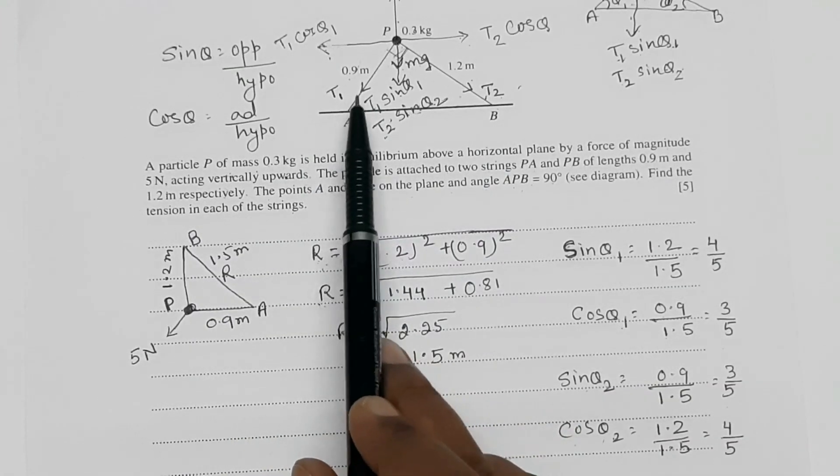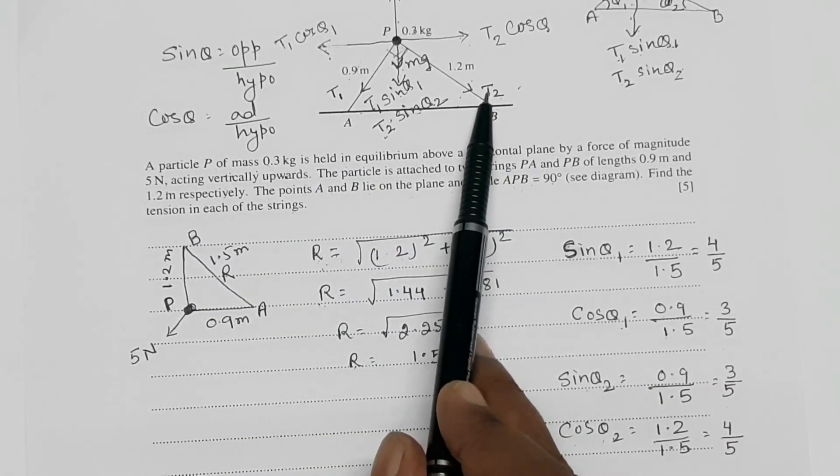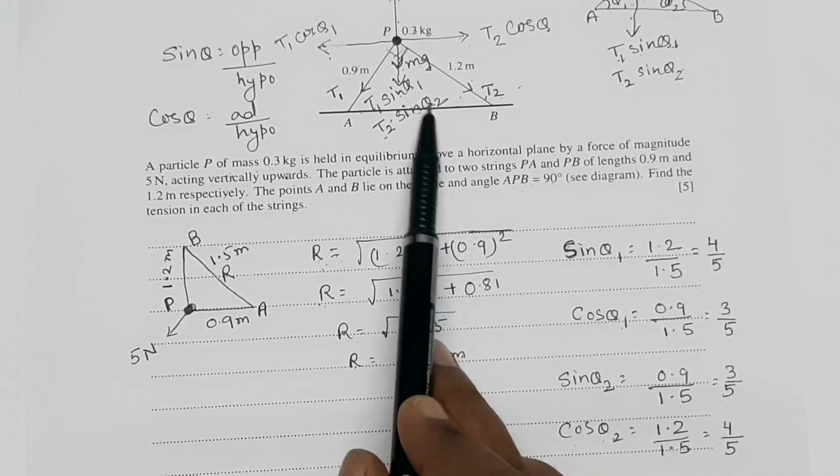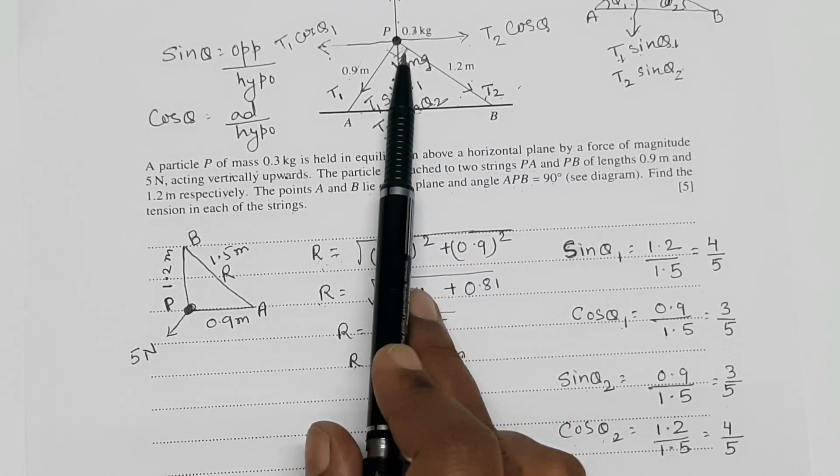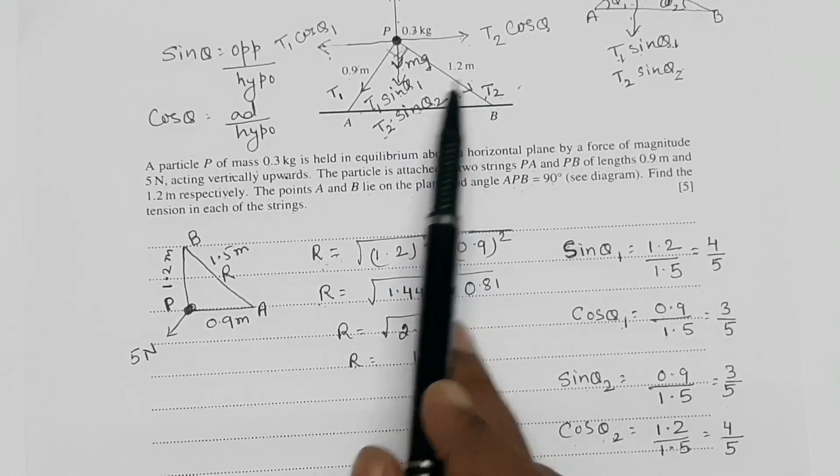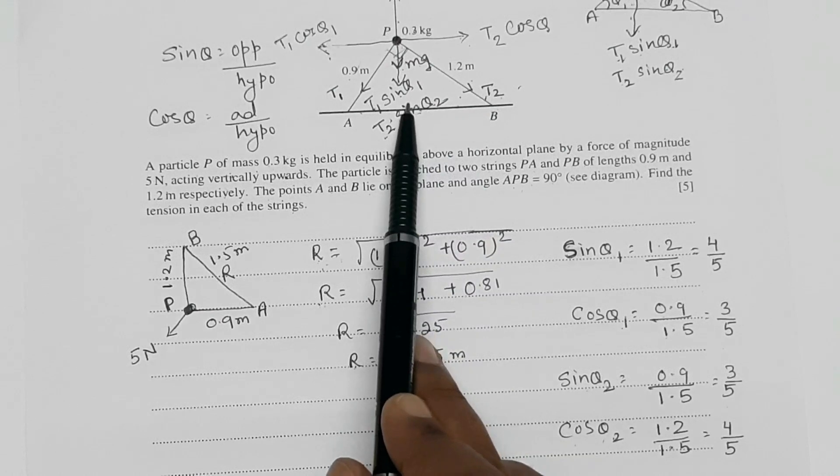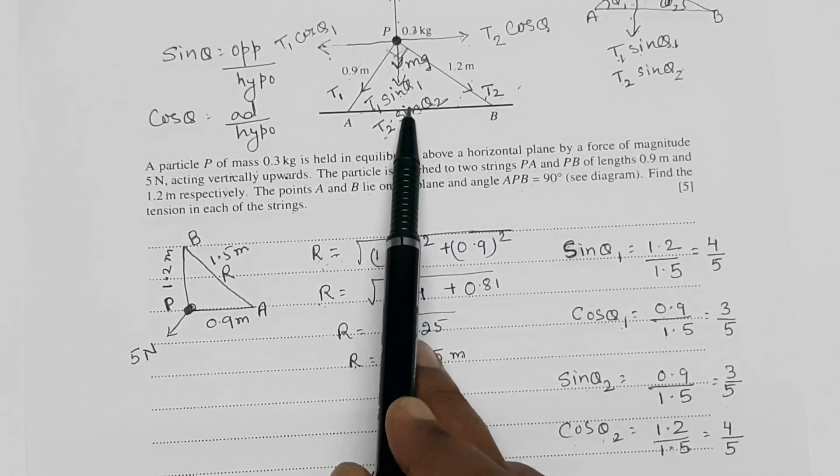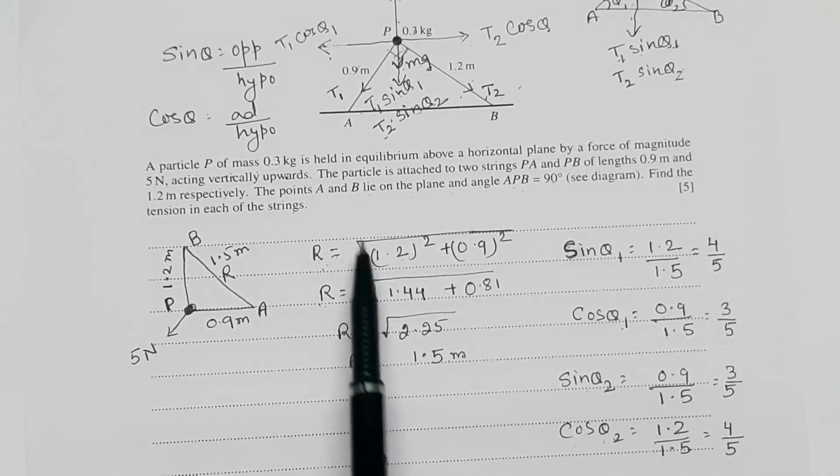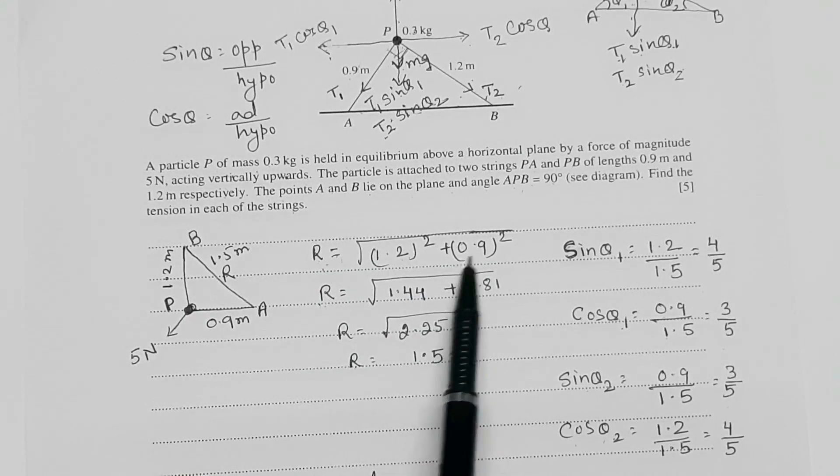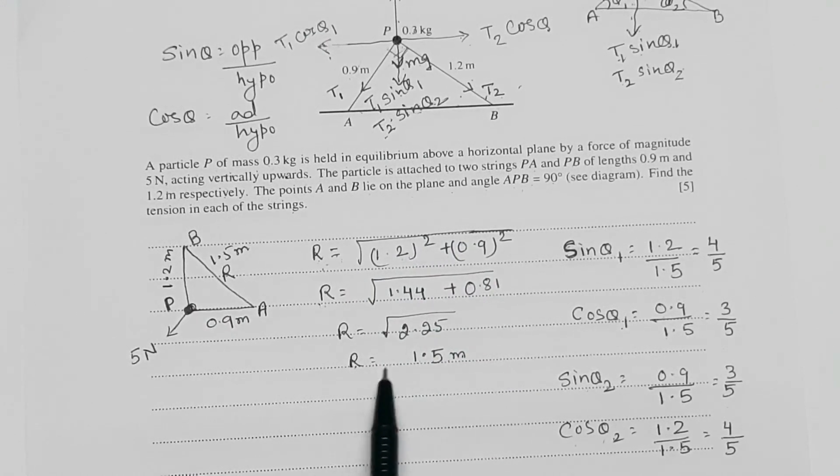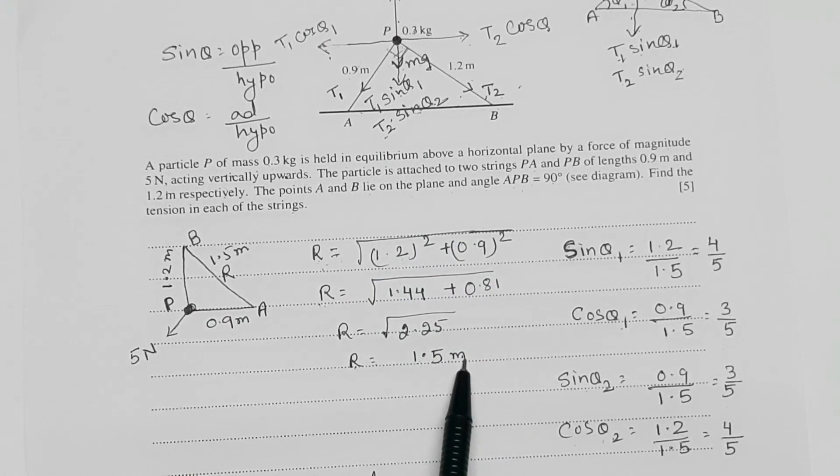After doing the components of forces T1 and T2, the next task is we have to find the value of this hypotenuse. Since it is a right angle triangle and the value of opposites and adjacent are given there. So we will find the value of hypotenuse with the help of Pythagoras theorem. So as per that theorem R will be equal to root under 1.2 square plus 0.9 square and when we will solve it we will get the value R will be equal to 1.5 meter.